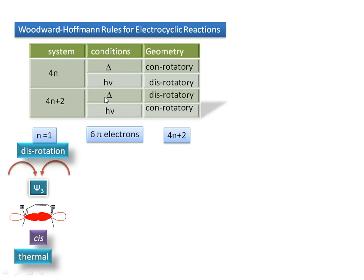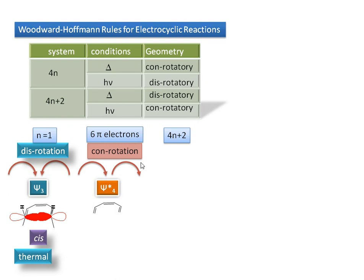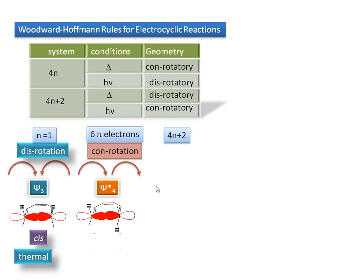For Ψ4, we examine the atomic orbitals of the end groups. Now we perform conrotation — that is, one atomic orbital of the end group turns clockwise and the other also turns clockwise. We get a trans-product. But in the given product, the trans-product is not formed, so we have to neglect these conditions.